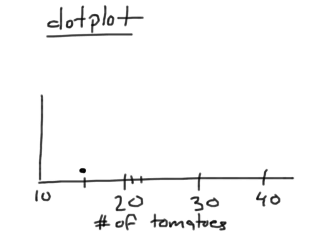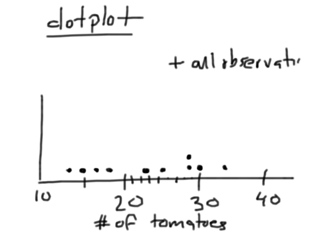23 gets a dot there, 18 gets a dot there, 30 is right there. 29 is right there — and we had two 29s, so we put a little dot on top. 33 is about right there, 14 about there, 25 about there, and 17 right there. That's your dot plot. The advantage of the dot plot is that you can see all the observations — every single one is there. On the downside, it's pretty tedious. You wouldn't want to make a dot plot if you had 100,000 tomato plants.